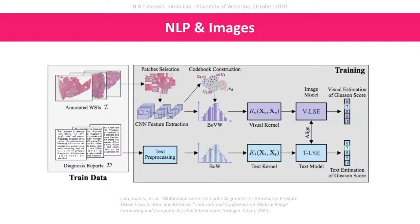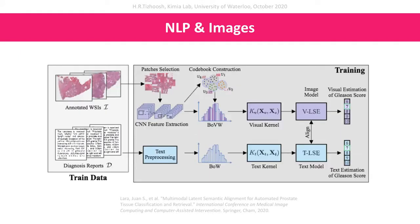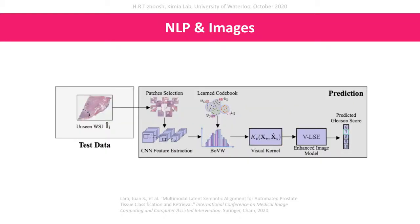NLP can do other things as well. People have started looking not just at learning from images but also bringing in reports and using them as training data simultaneously, so that visual data and textual data are combined during training. When you go online and use the system, you just have images — but the AI has learned from both images and reports, and you can use that combined knowledge to analyze a biopsy sample or any other image.